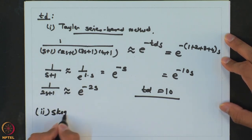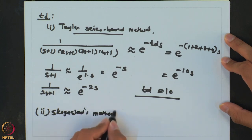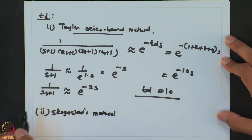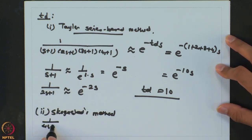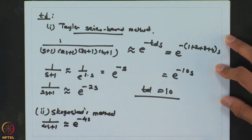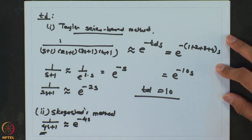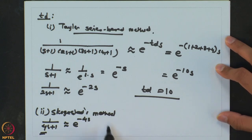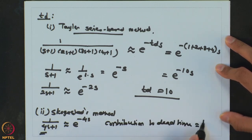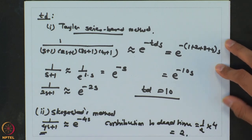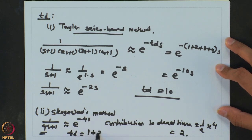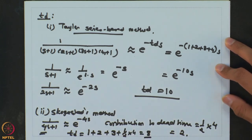For Skogestad's method we follow the same approximation procedure. The only difference is that (4s+1) ≈ e^(−4s), but in calculating tau we already used half of this contribution — 2 out of 4 was taken as tau. So the contribution to dead time is also taken as half: half of 4 = 2. The actual Td here will be 1 + 2 + 3 + half of 4 = 8. So the dead time from Skogestad's method is smaller than from the Taylor series approximation.